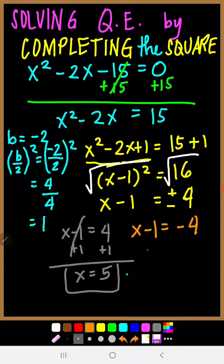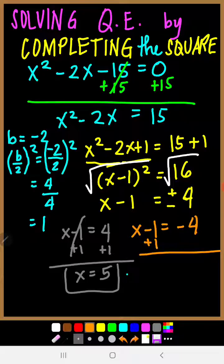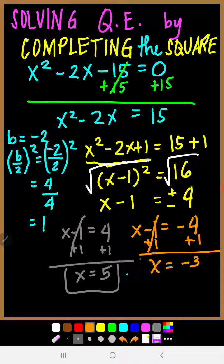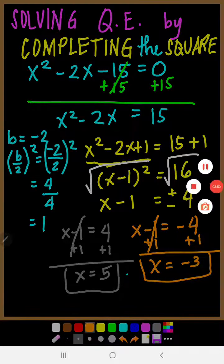For the second equation, we also add 1 to both sides. So this becomes 0, and x equals negative 4 plus 1, which is negative 3. So the two values of x are 5 and negative 3.